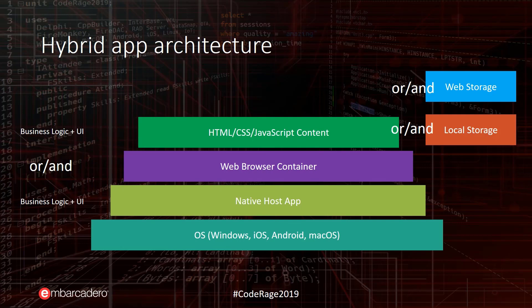This web browser container can be something based on Chromium or a platform's built-in browser. For other systems, it can be like a Node.js engine or something like Cordova. In Delphi and FireMonkey, we use a web browser container based on different engines depending on the provider. Business logic can be separated into different parts: you can add some to your JavaScript code — performing REST API calls, connecting to third-party SDKs — and some can be in the native host application for platform and device-specific features.